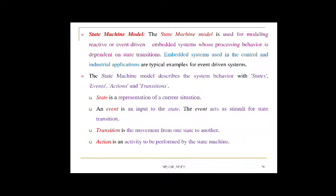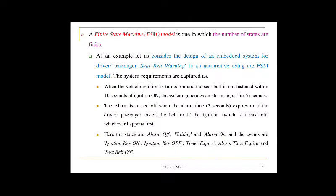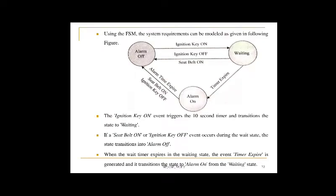A finite state machine (FSM) is one in which the number of states is finite. As an example, consider the design of an embedded system for a driver/passenger seat belt warning in an automotive. The requirements: when the vehicle ignition is turned on and the seat belt is not fastened within 10 seconds, the system generates an alarm signal for 5 seconds. The alarm turns off when the 5-second alarm time expires, the belt is fastened, or the ignition is switched off — whichever happens first.